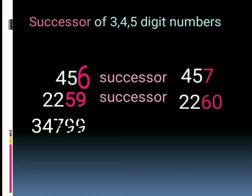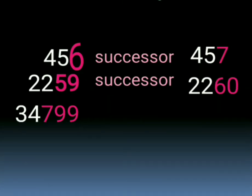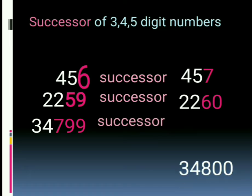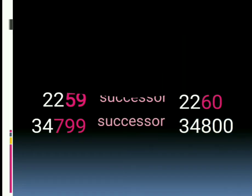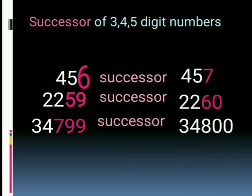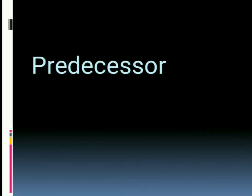Thirty-four thousand, seven hundred, ninety-nine. In this number, ones and tens are ninety-nine, so we have to change the hundreds place. Thirty-four thousand, seven hundred and ninety-nine's successor is thirty-four thousand, eight hundred. Thirty-four thousand, eight hundred and ninety-nine's successor — Predecessor.